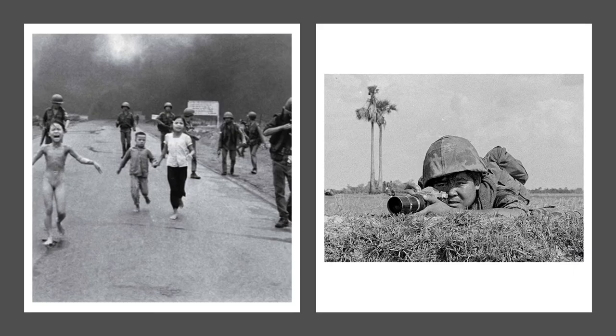You can now see the photographer, Nick Ut, on the right-hand side. The story about his role in this photograph is that after he took the photograph, realising just how much pain that girl was in, he said: 'I took a lot of water and poured it on her body. She was screaming, too hot, too hot.' He took her to hospital where he was told she might not survive — 30% of her body was covered in third-degree burns. He then took her to an American facility where he managed to arrange for her life to be saved. Does that change the way that you see this photograph?